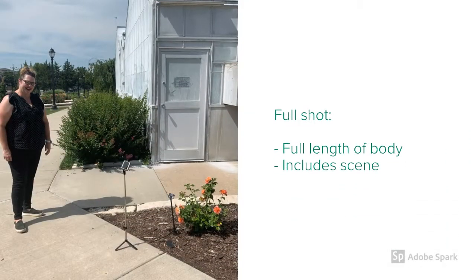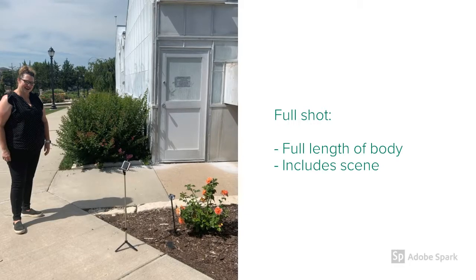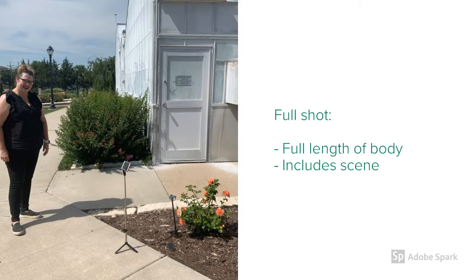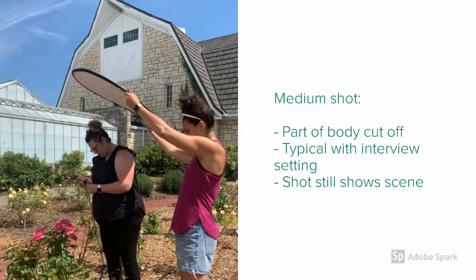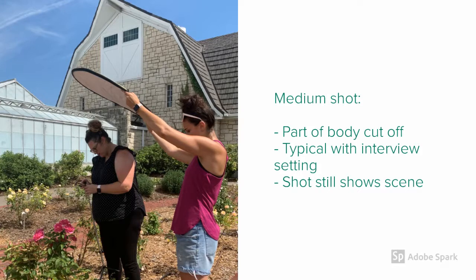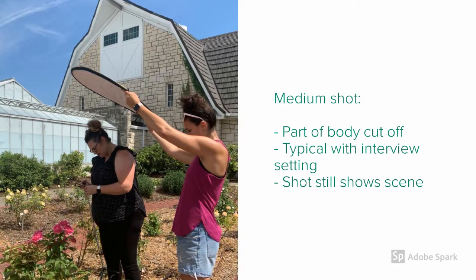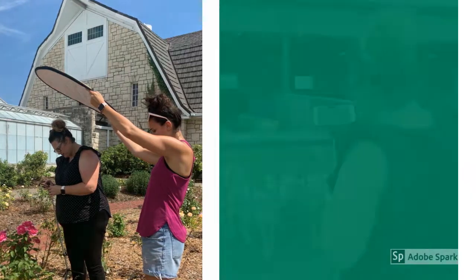A full shot includes the full length of the body and includes all the surrounding elements of the scene. In a medium shot, part of the body may be cut off. This typically happens in an interview setting or when you're trying to show something specific in a scene, like we are here with light.